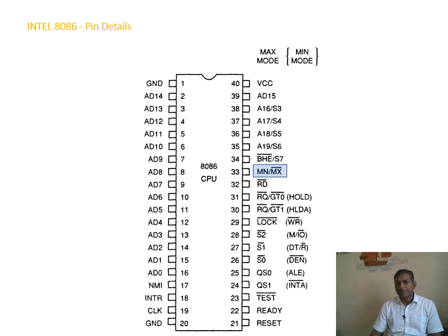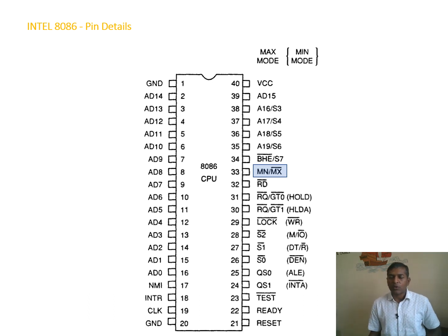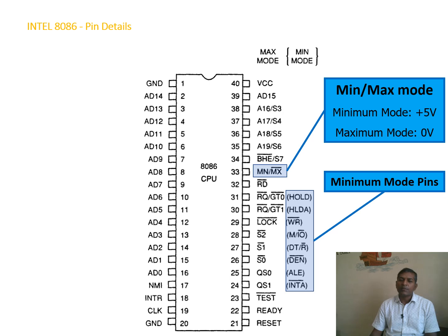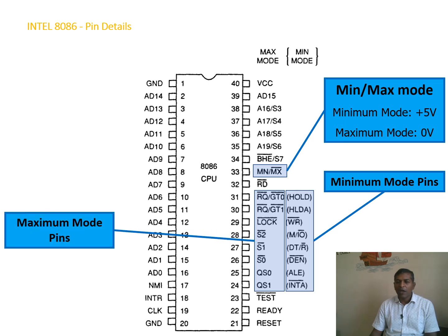The MN/MX pin allows the microprocessor to work in a specific mode. If this line is one (plus 5 volts), minimum mode is activated. If it is zero (no voltage), maximum mode is in use. Certain pins are designated for minimum mode and others for maximum mode depending on the state of this MN/MX pin.